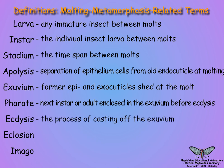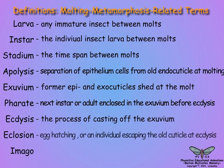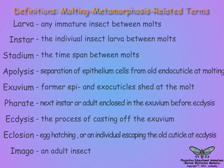Ecdysis is the process of shedding the exuvium. Eclosion refers to both the hatching of an egg or the act of an individual escaping from its previous cuticle — for example, escape of the adult insect from the pupal cuticle for holometabolous insects, or from the last larval cuticle for hemimetabolous species. Finally, an imago is the term for an adult insect.